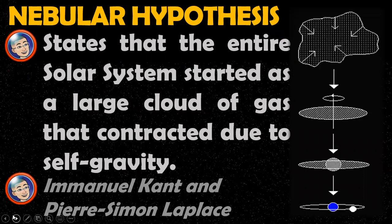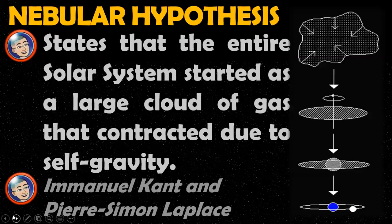We also have the nebular hypothesis. Nebular means dust and clouds in space. A large mass of clouds and dust were contracted due to self-gravity. Because of the conservation of momentum, it pulled and formed the clouds into a disk shape. This disk began to rotate and created a central mass, which is now the sun. Then, centrifugal force together with gravitational force created rings. These rings continuously rotate, and eventually planets were created.